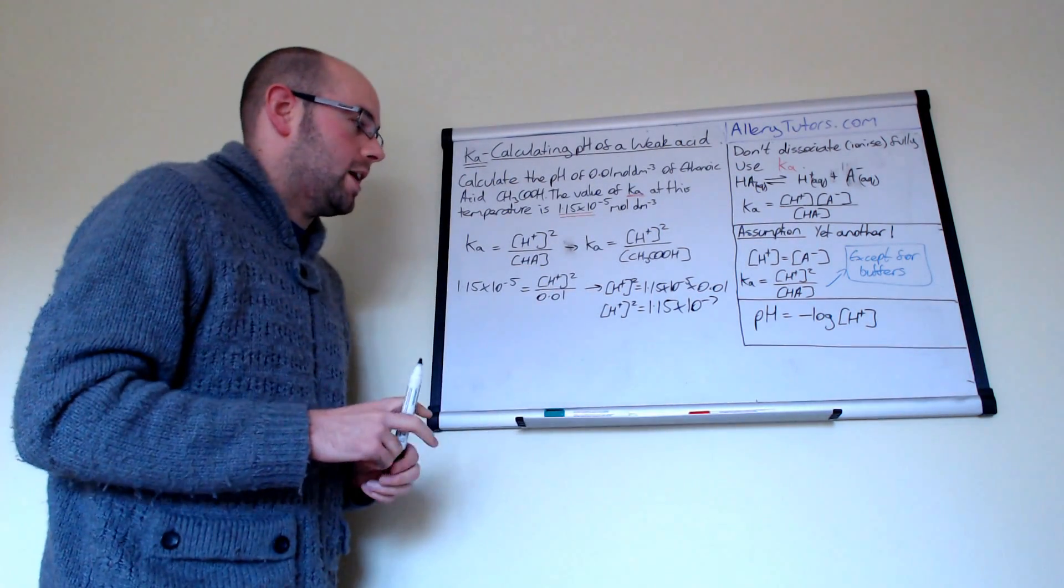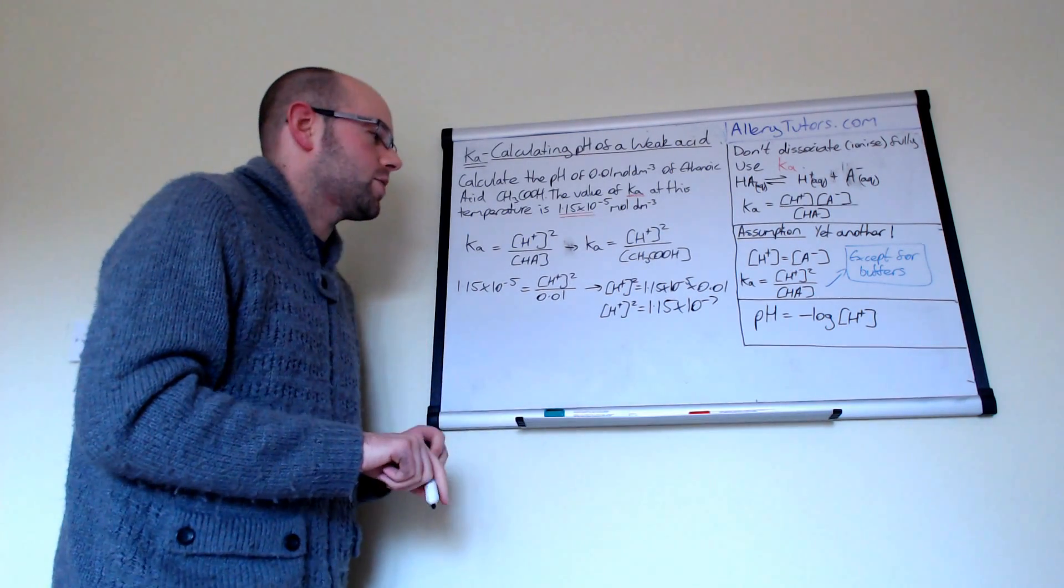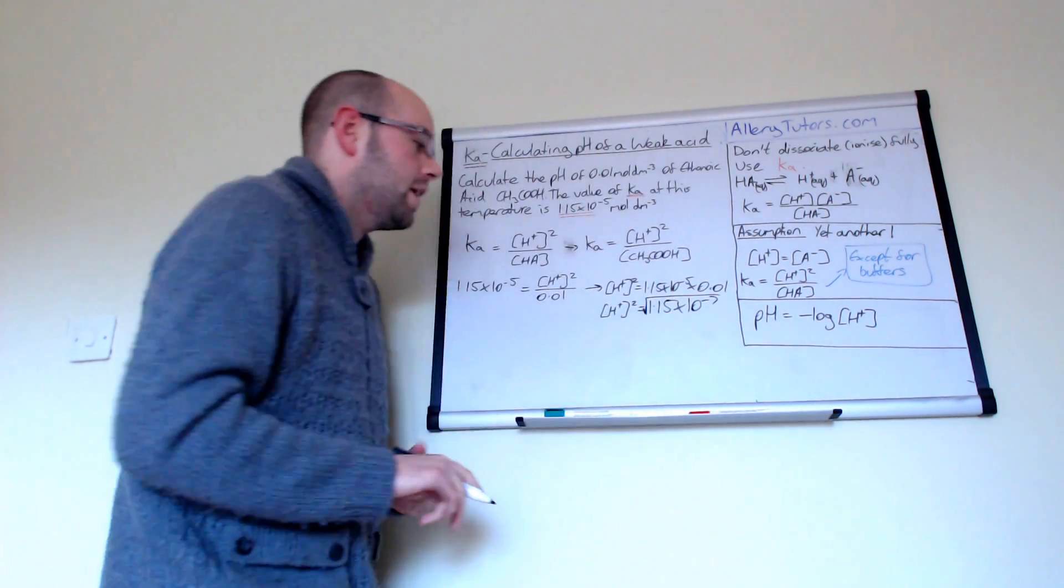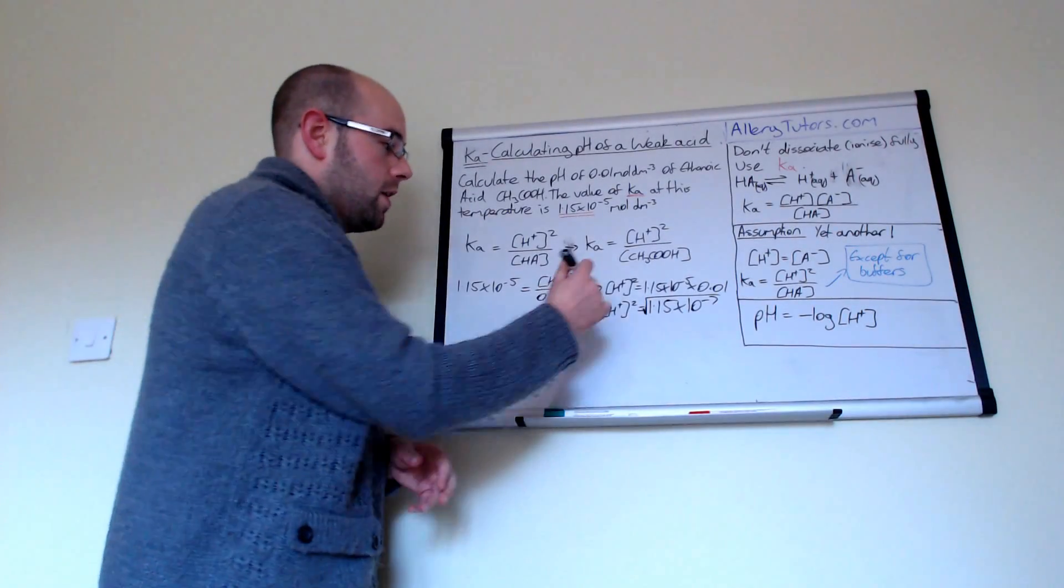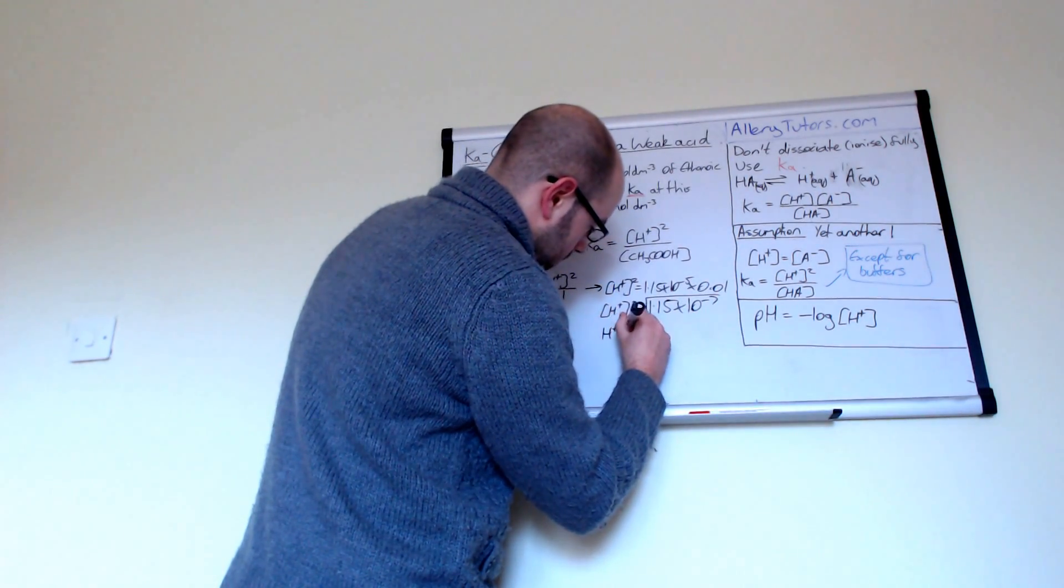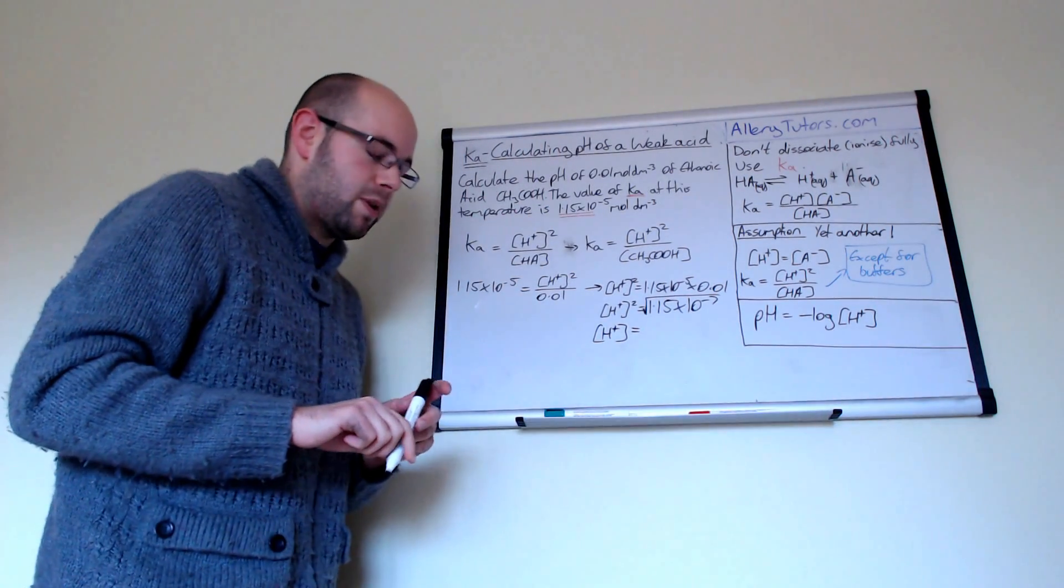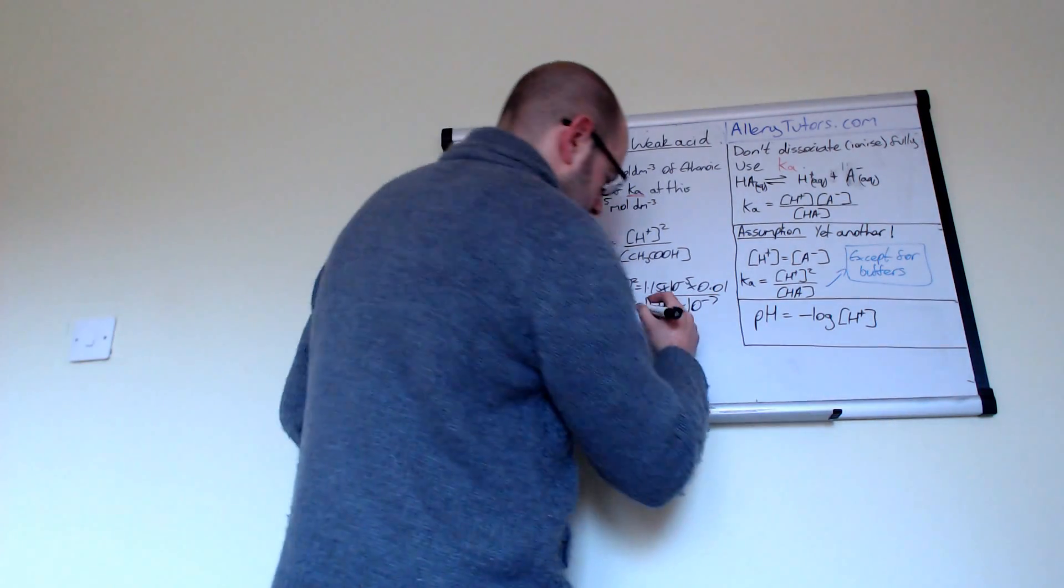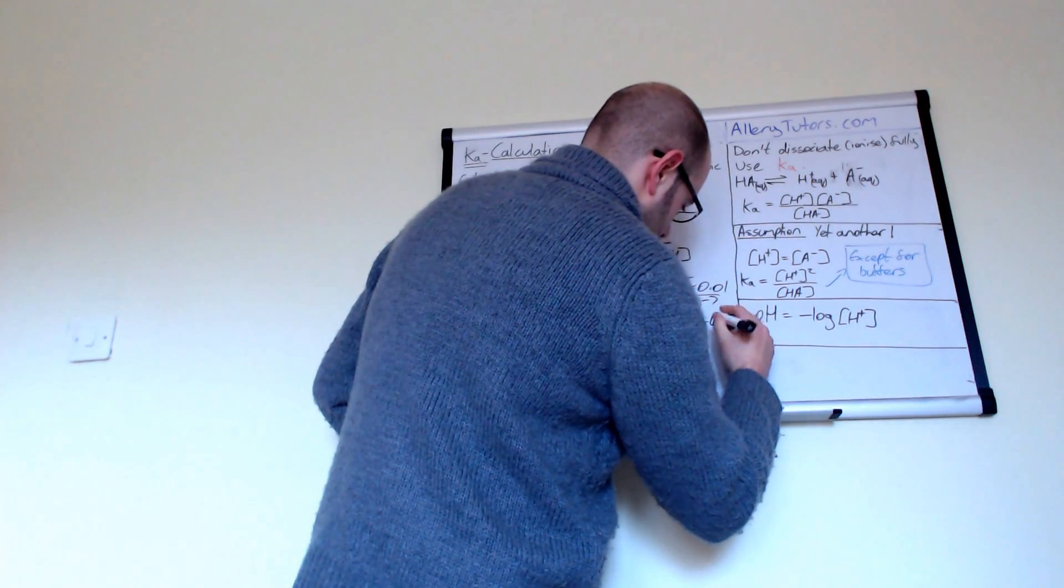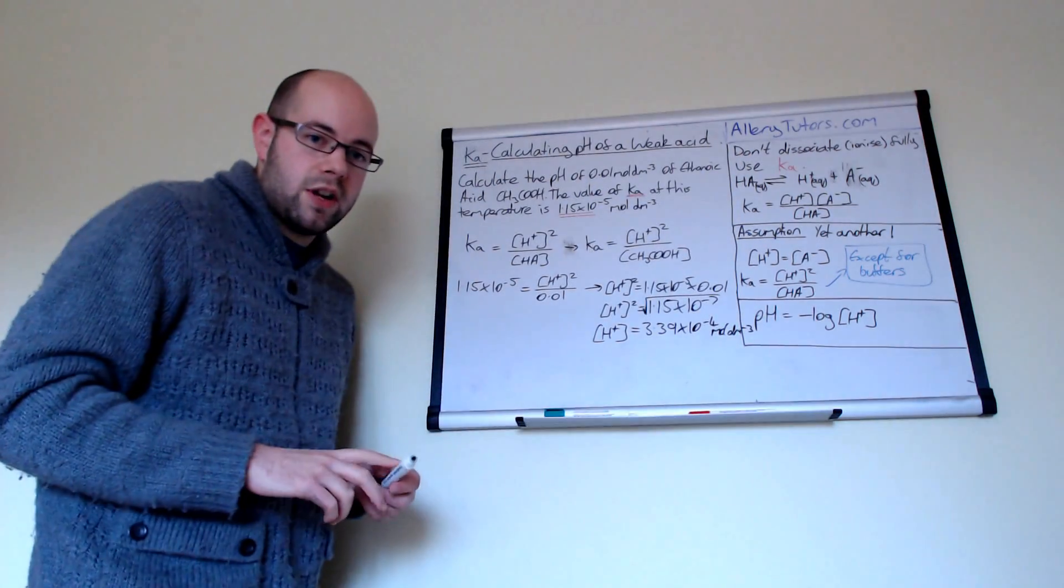Now, this is obviously a problem because we have H plus squared. We need to just work out what H plus is. So what we have to do is we have to take the square root of that side there. And when we take the square root of that, that obviously square roots this side. So by taking the square root of that value, we can work out the concentration of H plus. So the concentration of H plus is 3.39 times 10 to the minus 4 moles per dm cubed.